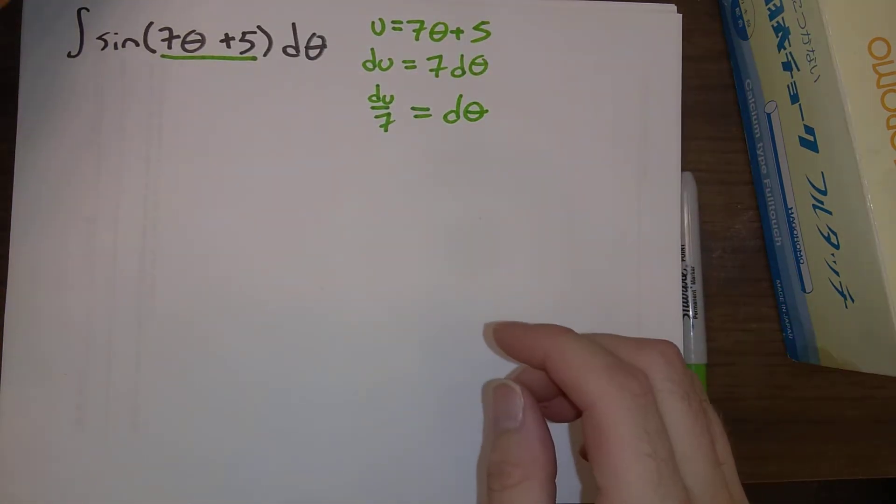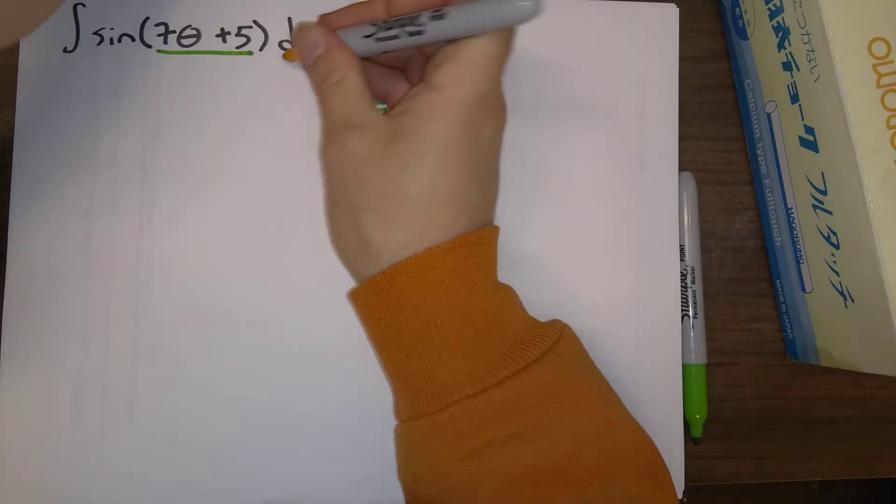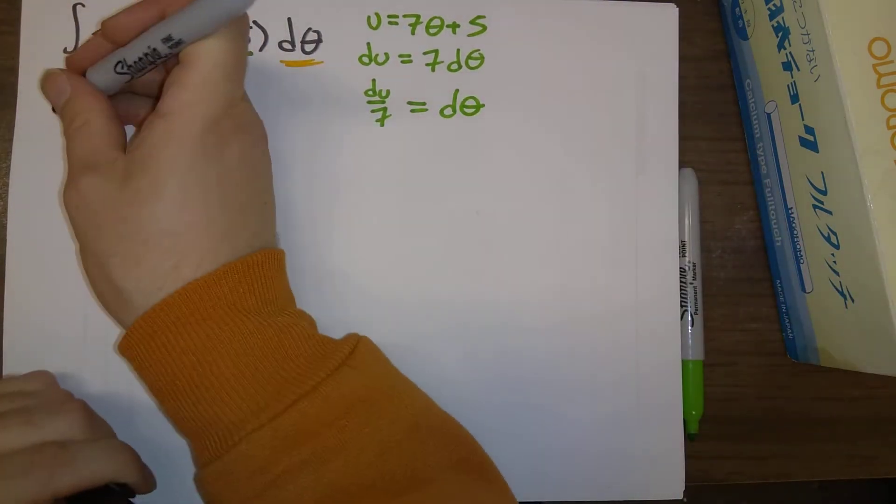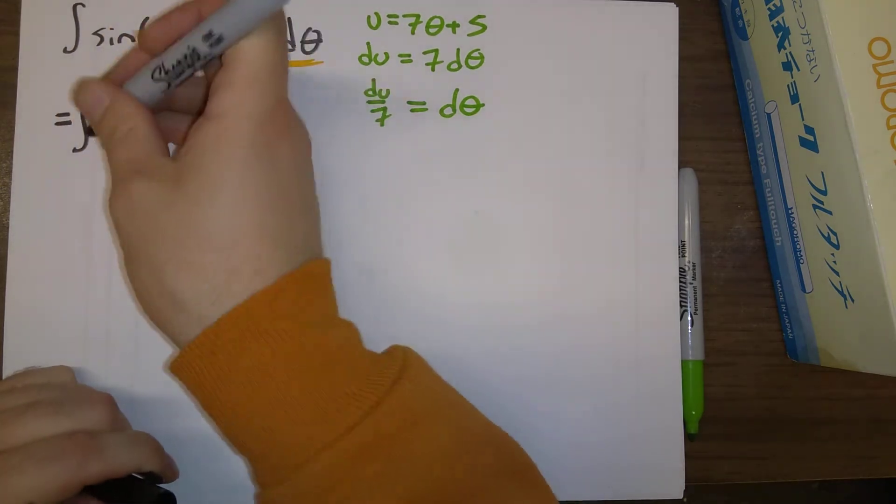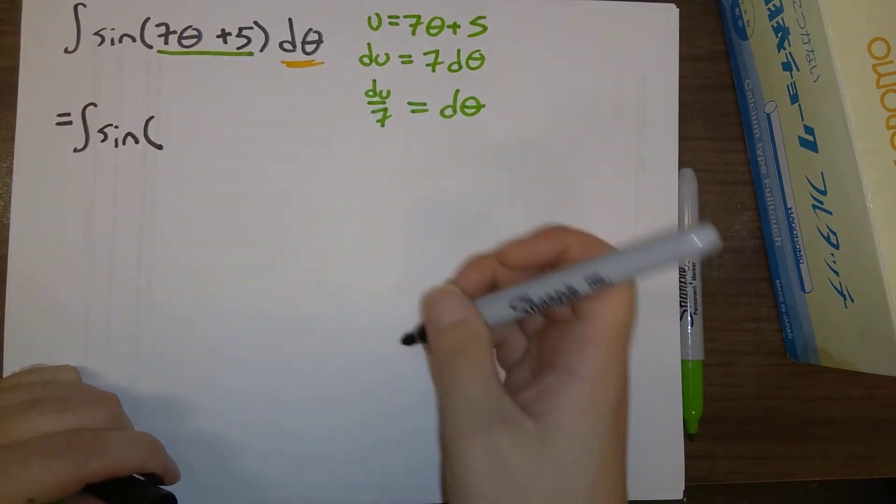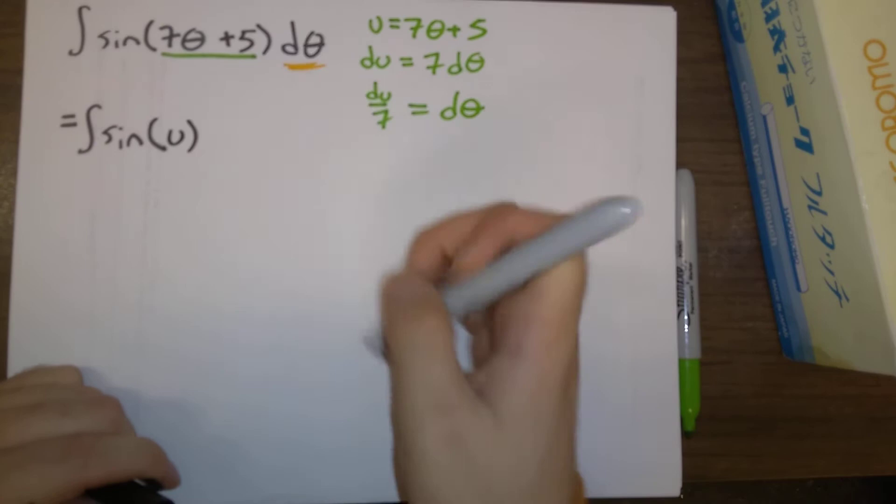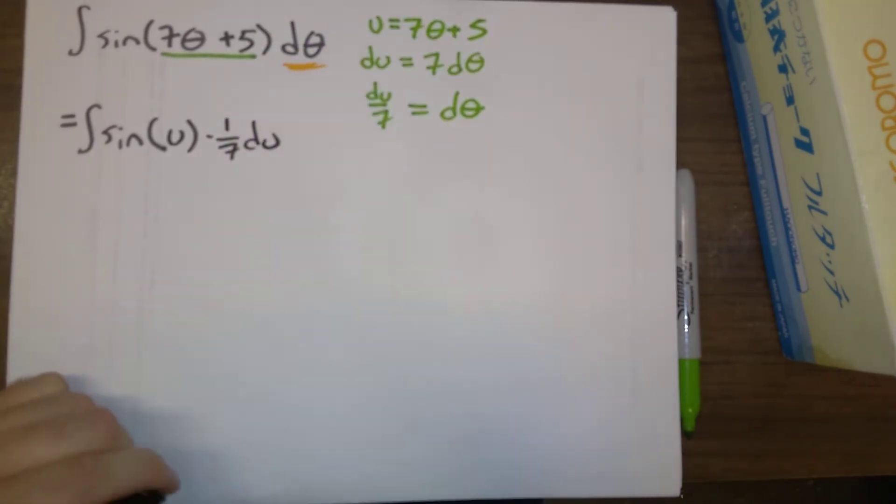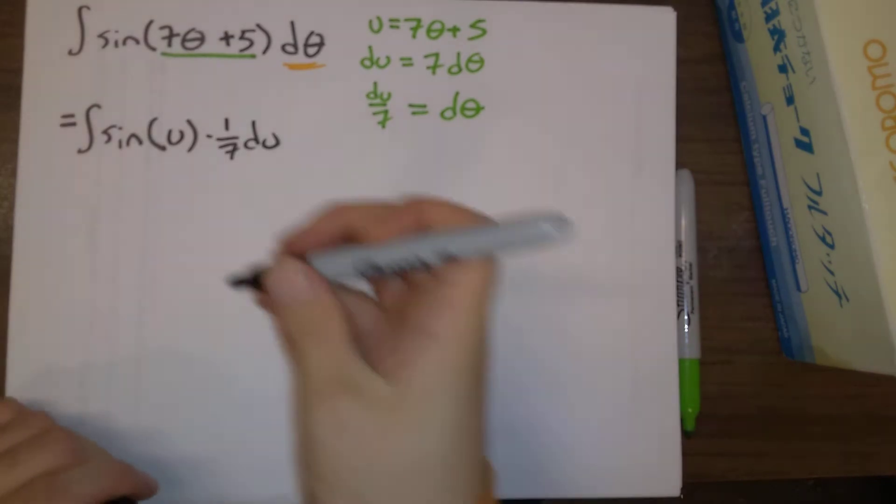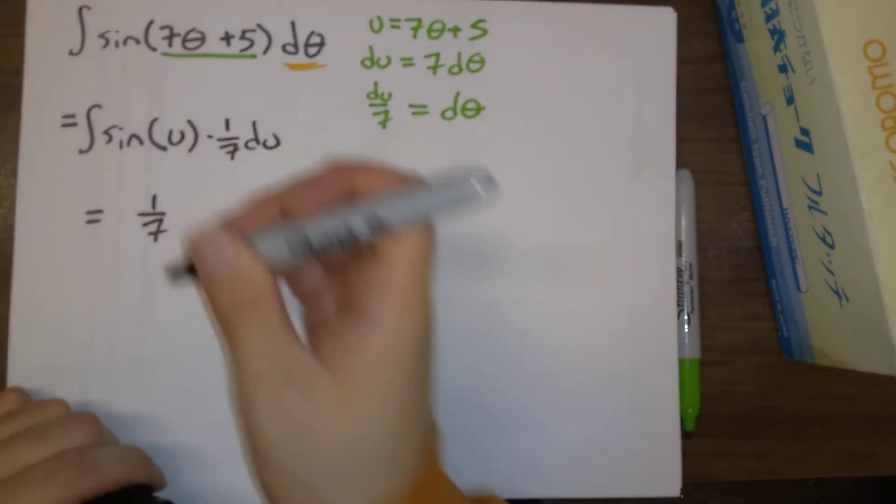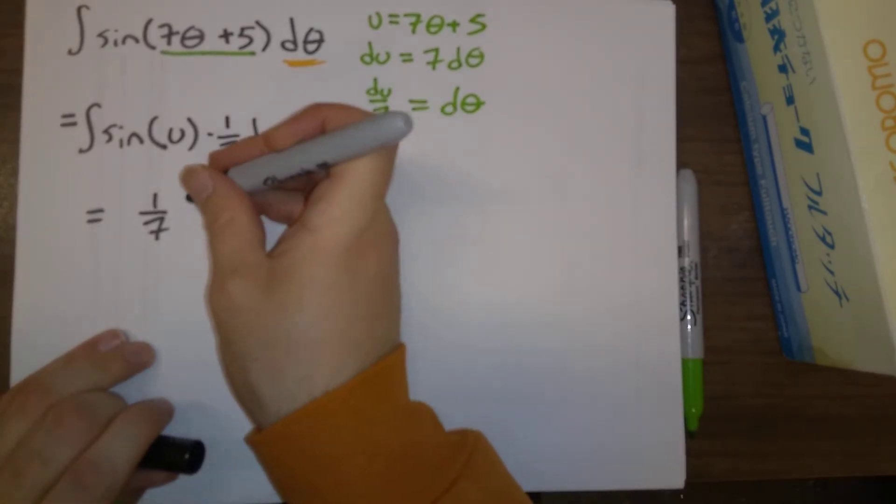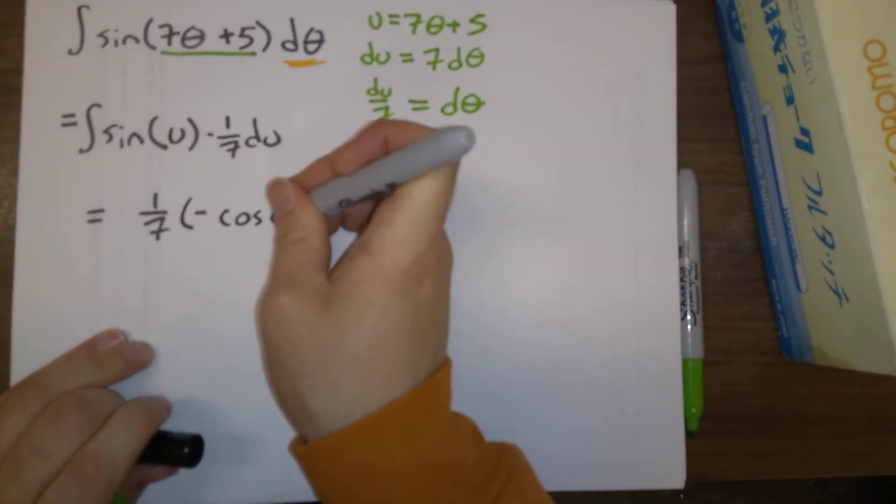So we can go ahead and make that replacement here. Replace d theta with du over 7. And so what do we end up with? Sine of u times 1 7th du. And so now we've got 1 7th, and I think we know that the antiderivative of sine of u is minus cosine of u.